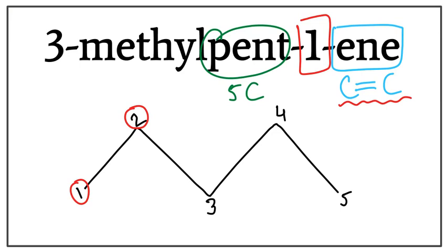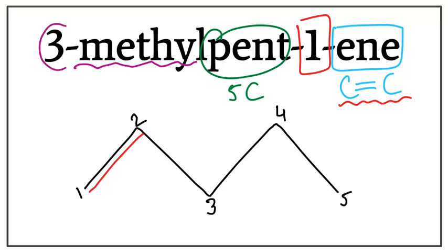So let's draw the double bond. Now, there is also a methyl group attached to the parent chain, which is on carbon number 3, right here. So let's get rid of these numbers and attach the methyl on the 3rd carbon.